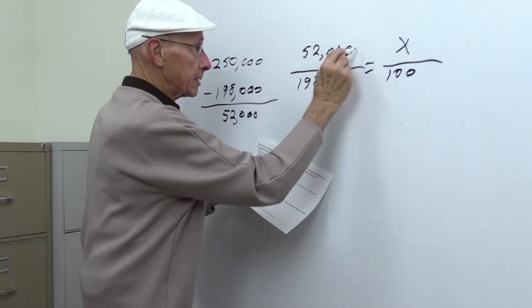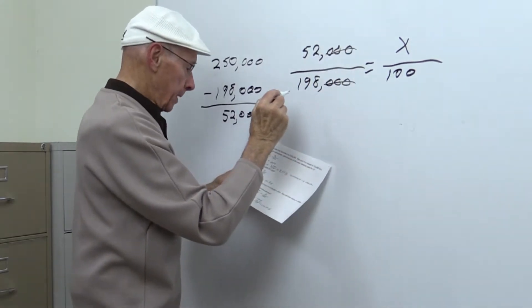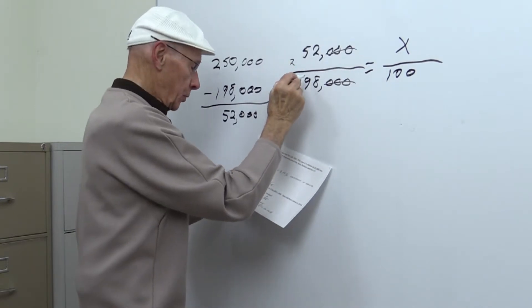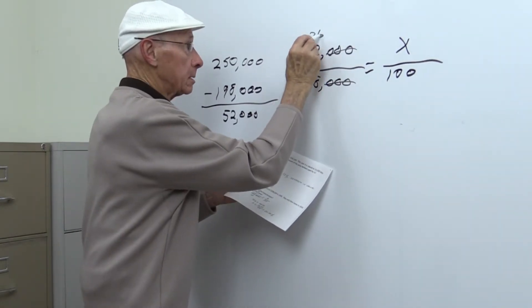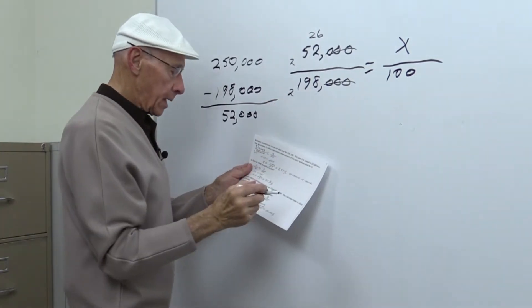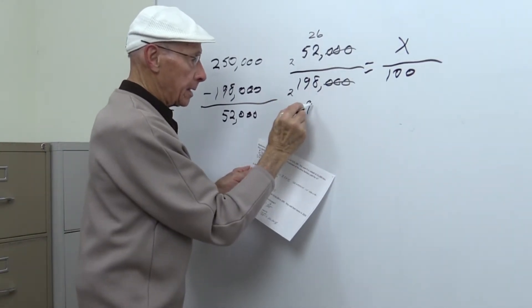If we cross out some zeros here, and 2 goes into 52, 26 times, and 2 goes into 198, 99 times.